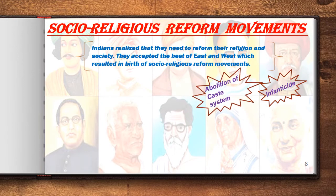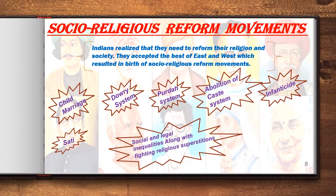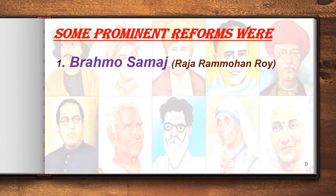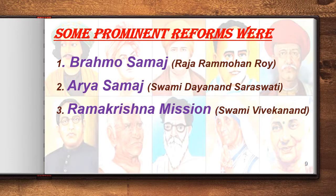Some examples of reforms include the abolition of the caste system, child marriage, dowry system, sati, infanticide, and social and legal inequalities, along with fighting religious superstition, idolatry, and hereditary priesthood. Some prominent reform movements were the Brahma Samaj by Raja Ram Mohan Roy, the Arya Samaj by Swami Dayanand Saraswati, and the Ramakrishna Mission by Swami Vivekananda.